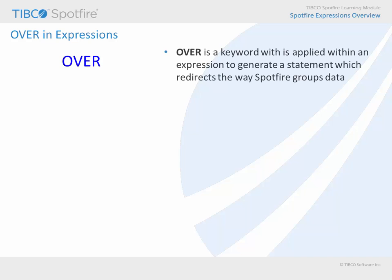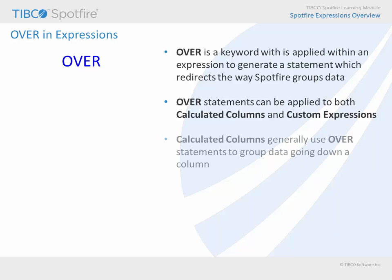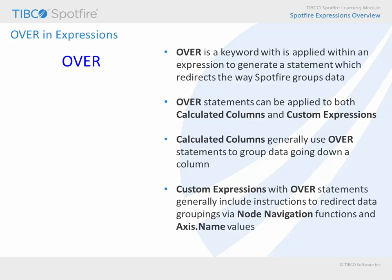One of the more challenging constructs in expressions for Spotfire users to understand is the over statement. Simply put, the over keyword is applied to construct expressions which redirect the way in which Spotfire would otherwise group data for aggregation. And while it is generally applied differently, these over statements can be extremely useful in both calculated columns and custom expressions. In calculated columns, the over statement is generally applied in order to group data going down a column based upon categorical values in the data table, while over in custom expressions is more frequently used to redirect calculations to other areas of a hierarchy.